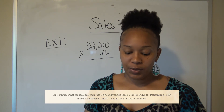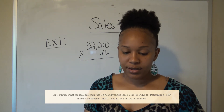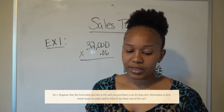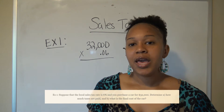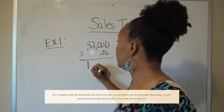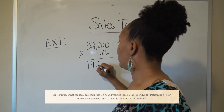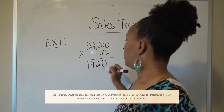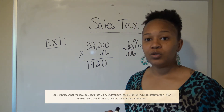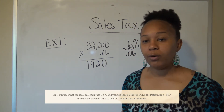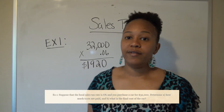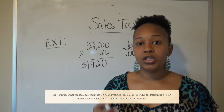Using a calculator: 32,000 times 0.06 gives you $1,920. So the sales tax you will pay for the car is $1,920.